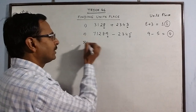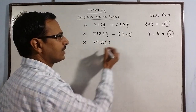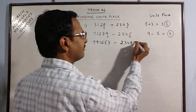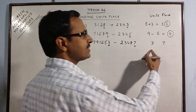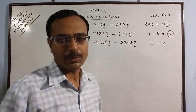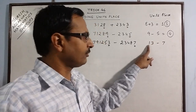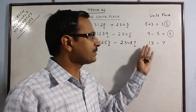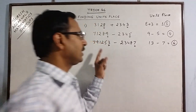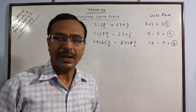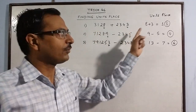But when the unit's place of the first number is smaller, suppose you have the problem as this minus 23487. Now this unit's place is 3 and this is 7. The difference of these two will give you a negative number which cannot be the answer. So what you do is put a prefix 1 before this number 3 so that it becomes 13, and now the difference of 13 and 7 is 6, which gives you the unit's place of the difference of these two large numbers. There is no need to subtract the entire numbers.